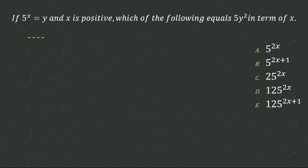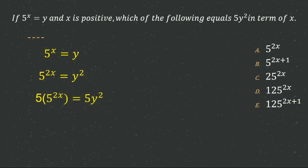The next question: if 5^x = y and x is positive, which of the following equals 5y² in terms of x? We cannot directly get 5y² from 5^x, so we work from the right side. Taking the square of both sides gives 5^(2x) = y². Multiplying both sides by 5 gives 5 · 5^(2x) = 5y², which equals 5^(2x+1). So 5y² = 5^(2x+1), which is the C option and the correct answer.